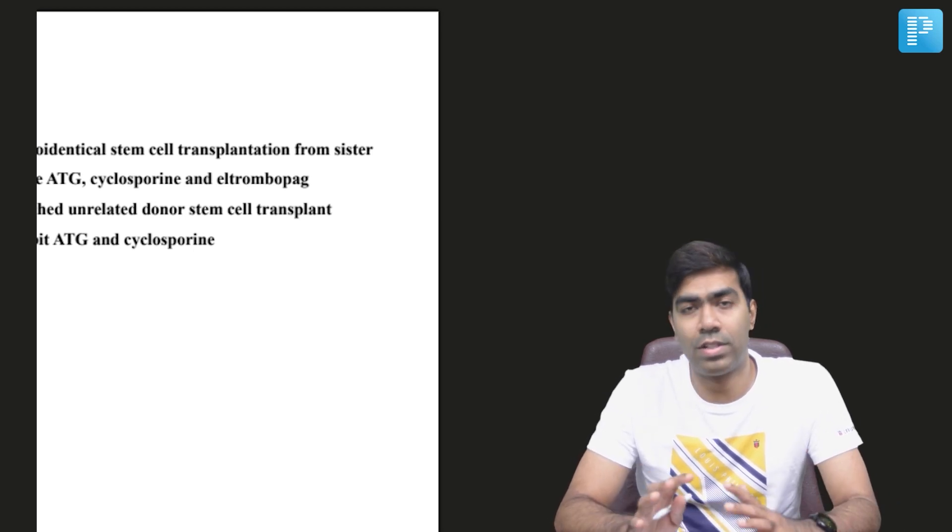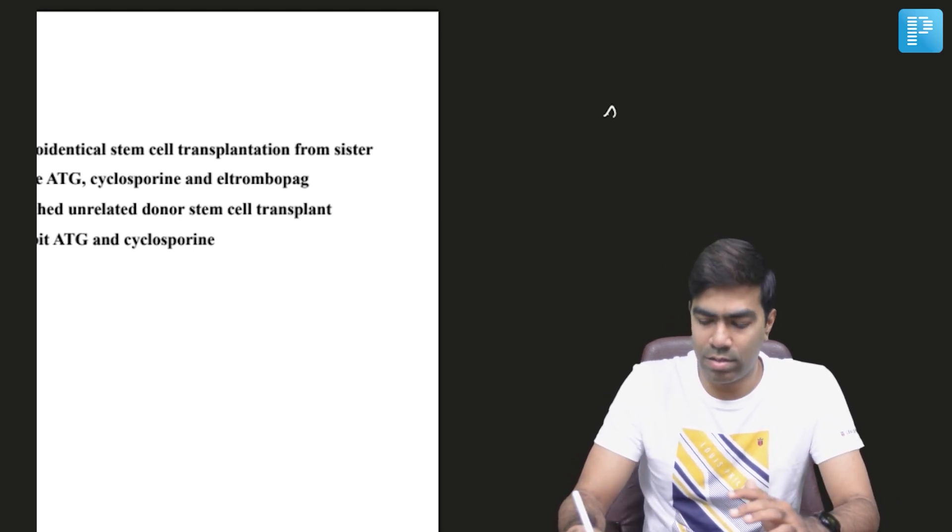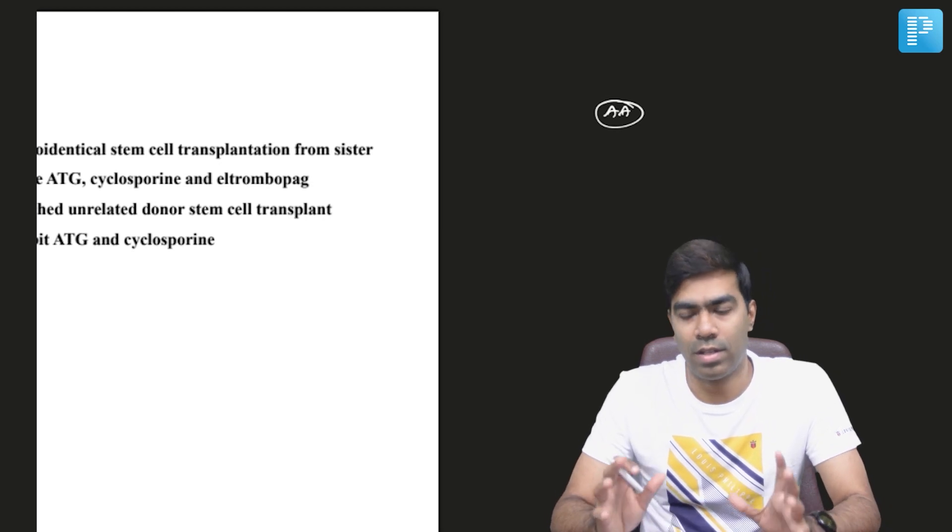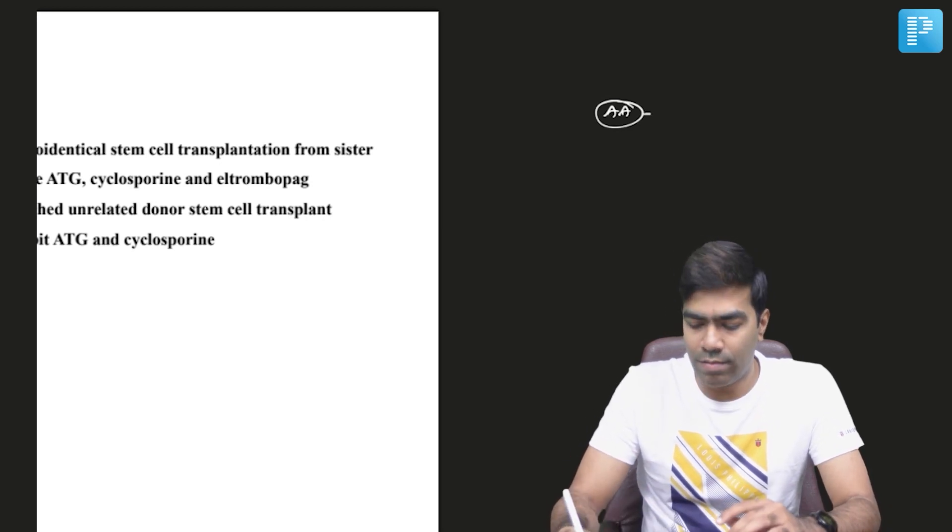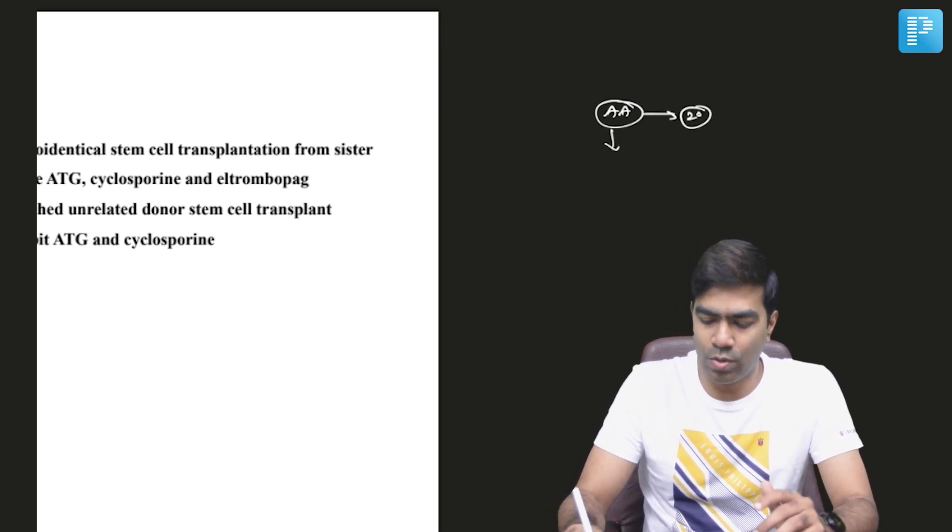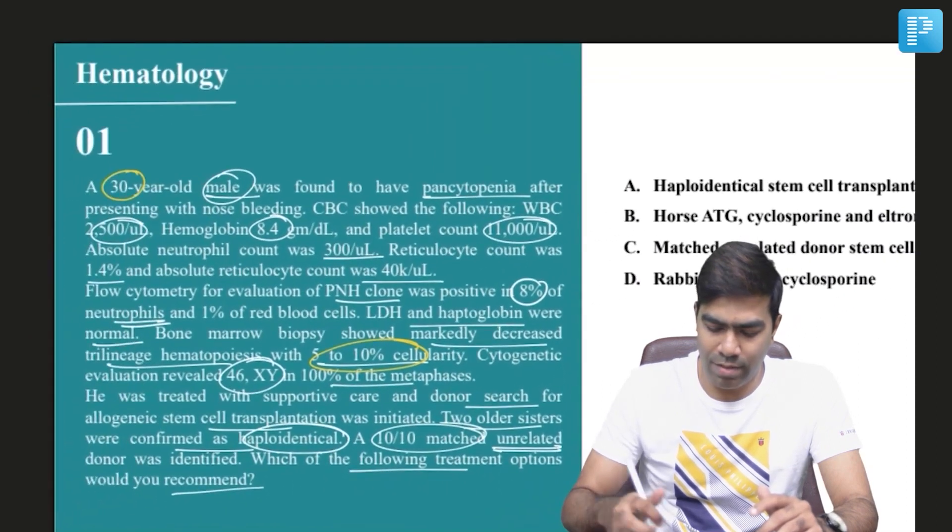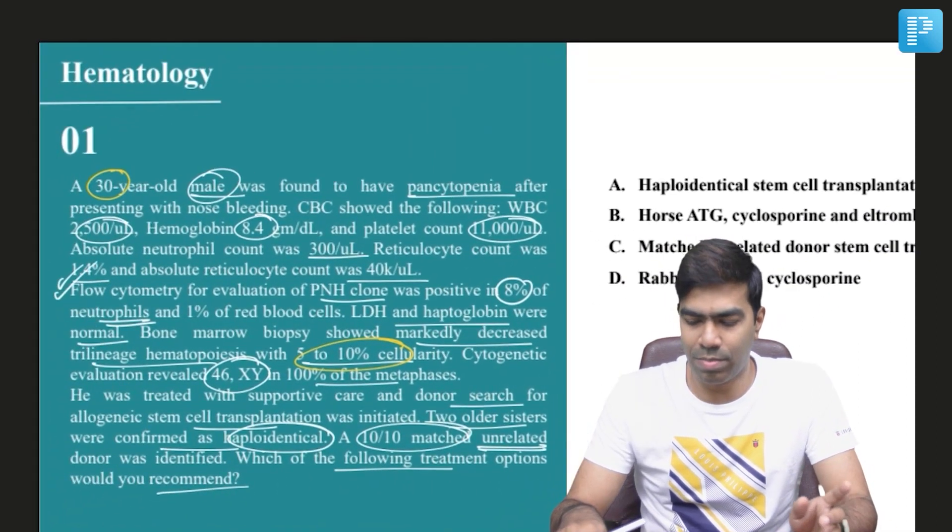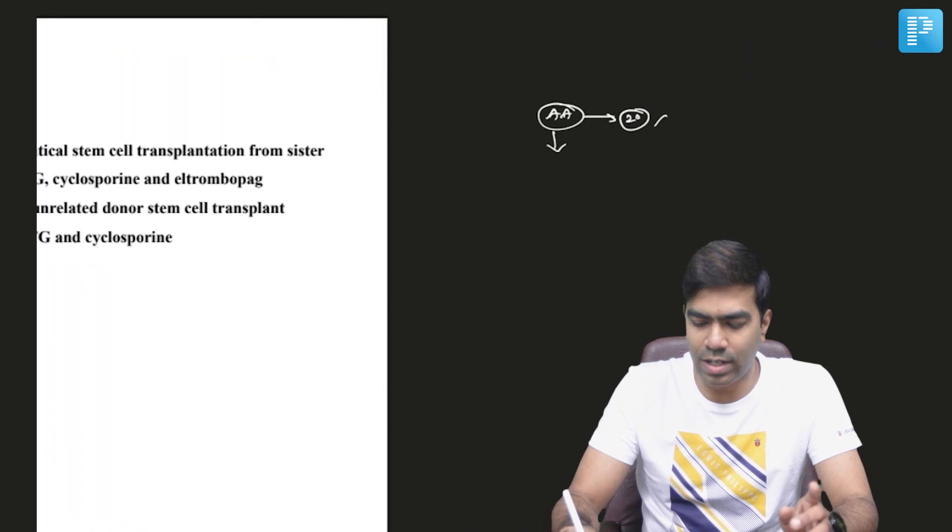discussion of the answer, first let us discuss something about aplastic anemia in a nutshell. So we have secondary aplastic anemia which is usually due to some drugs or probably due to some viral infections. As we all know, this patient does not have any background history that is suggestive of a secondary aplastic anemia.